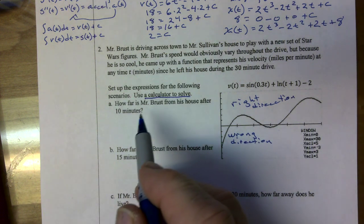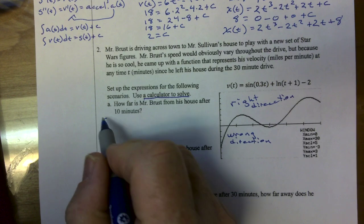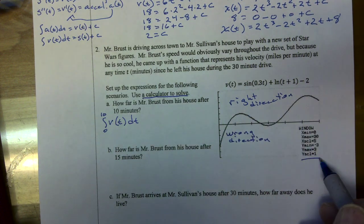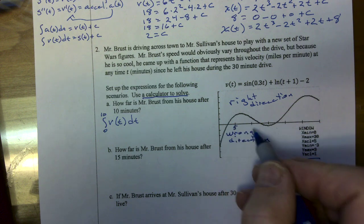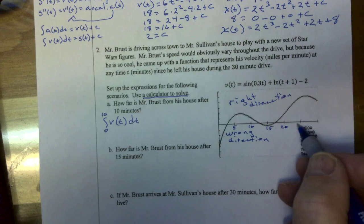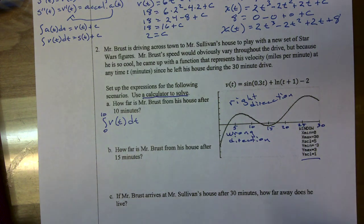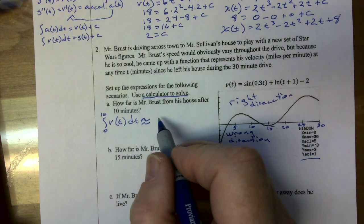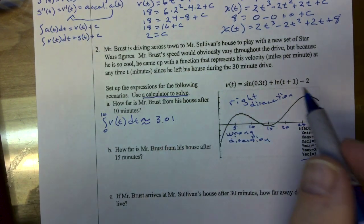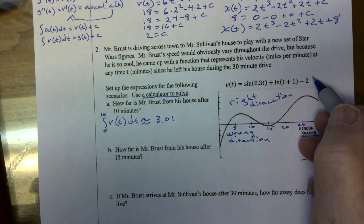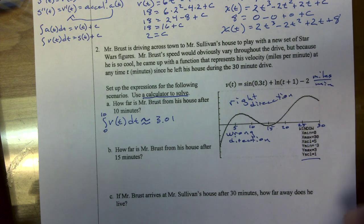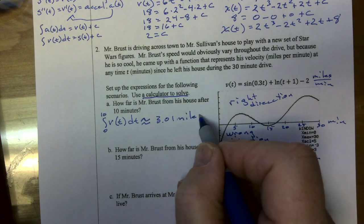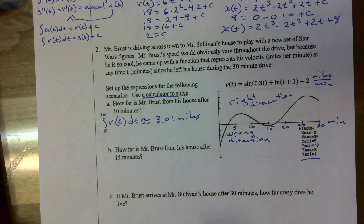How far is Mr. Bruss from his house after the first 10 minutes? I'm going to write the integral from 0 to 10 of V of T dt. The graph is scaled by 5, so the increments are 5, 10, 15, 20, 25, 30. When I did that on my calculator, I got approximately 3.01 miles. Since velocity is in miles per minute and time is in minutes, the area underneath gives miles. So he is approximately 3 miles from home.